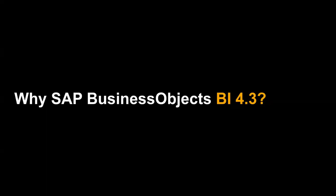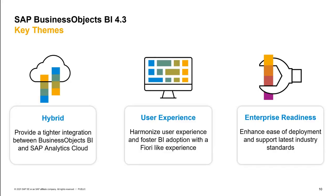Now the core of the presentation: why Business Object BI 4.3? We worked on three main themes. The first is hybrid — making sure all your on-premise investments can be leveraged by SAP Analytics Cloud. The second, and I would say more important for you, is the new user experience in BI 4.3. The third is enterprise readiness — everything we did inside the BI platform to make it easier to install, maintain, and audit.